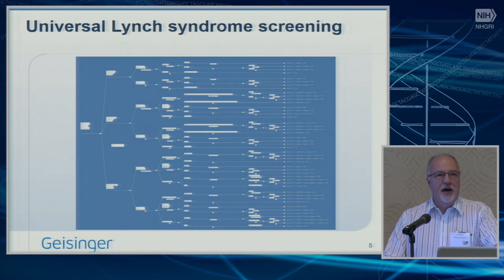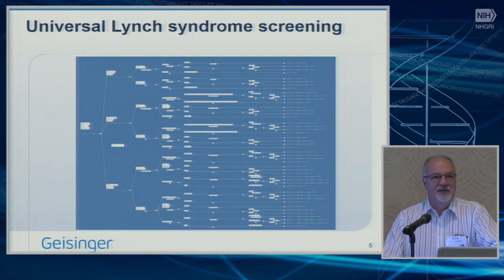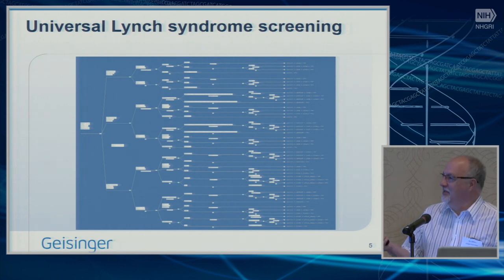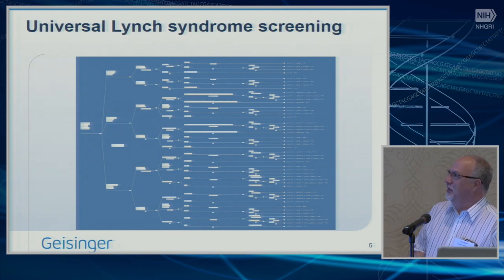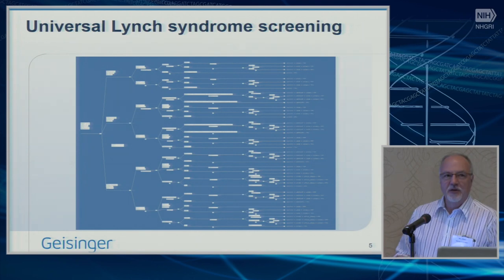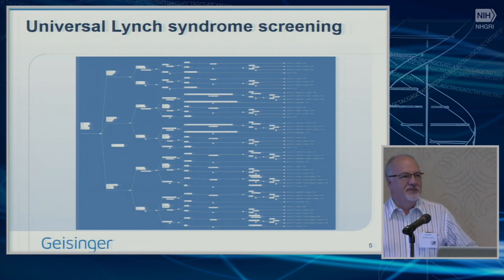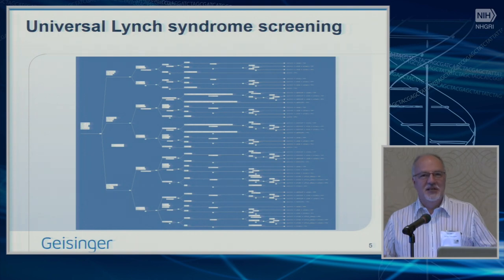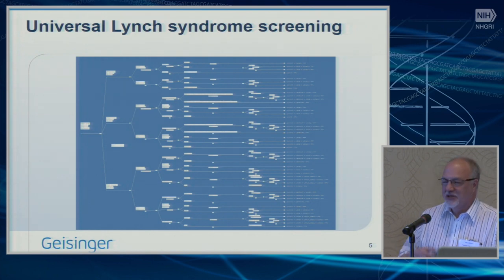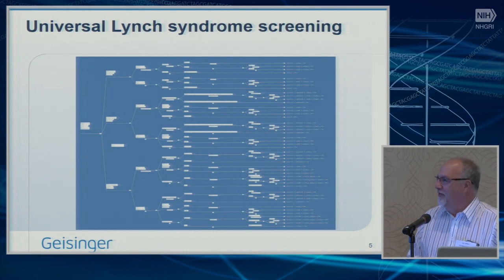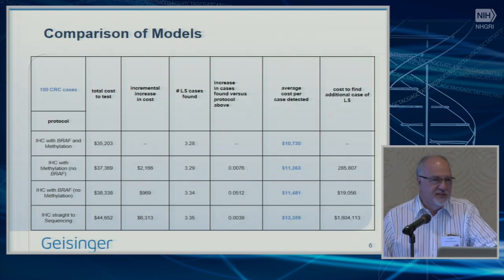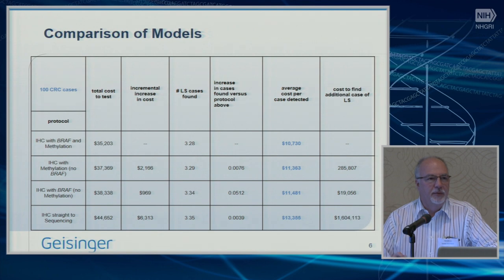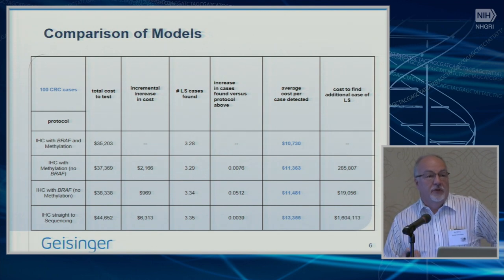Dan made an interesting comment yesterday about the afternoon it would take to slap together an economic decision analysis. This is one branch of a tree that my analyst came up with for the universal Lynch syndrome screening. The entire thing actually covered his office door at eight-point font. So these things can get incredibly complex. But through a process of pruning, you can get down to useful information. As a system, when I was at Intermountain Healthcare, we decided based on the EGAP working group recommendation to implement universal tumor screening for Lynch syndrome.